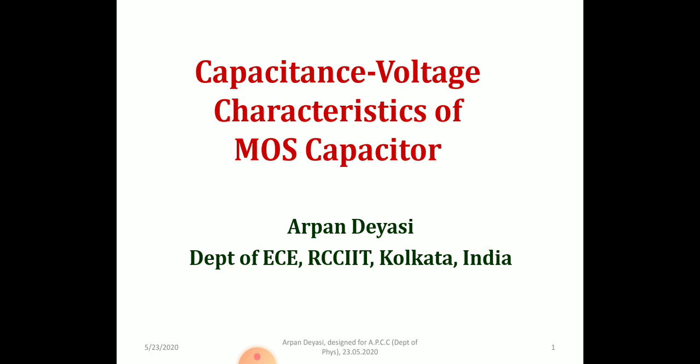Let me give a simple recapitulation of the previous lectures so you can proceed with the present one. In the first lecture, I started with the foundation of the MOS structure. I drew the band diagram under unbiased and biased conditions, showing how the band varies for p-type and n-type substrates, and explained the accumulation, depletion, and inversion conditions — how different band bendings occur and how majority and minority carriers accumulate in respective cases.